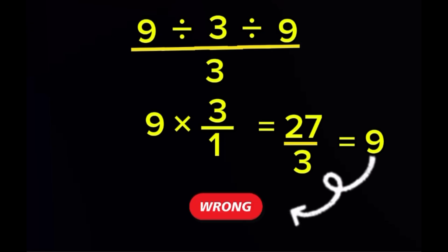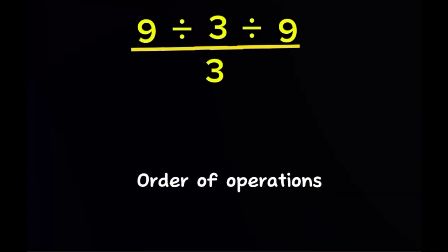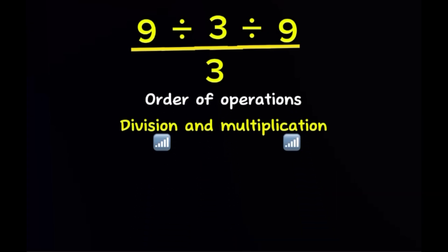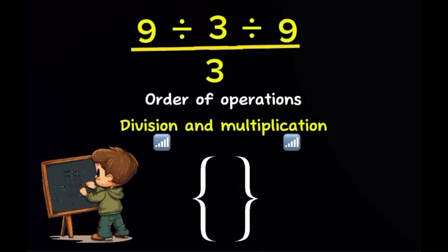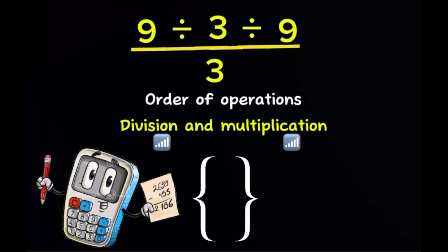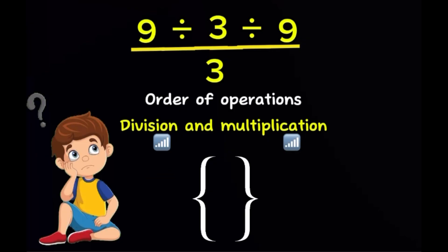The reason this answer is wrong has nothing to do with intelligence and everything to do with the order of operations. In mathematics, division and multiplication have the same priority, and when there are no brackets, you're not allowed to jump the middle, rearrange the expression, or solve the part that feels easiest. Mathematics is strict about structure. You must move calmly and patiently from left to right, without skipping any step.